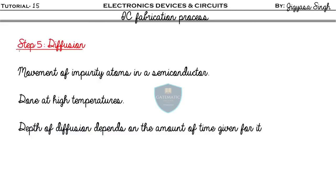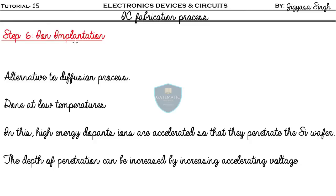Step five is diffusion. Here, diffusion means the movement of impurity atoms in a semiconductor. This process is done specifically at high temperature, and the depth of diffusion depends on the amount of time given — more time results in greater diffusion depth, and less time results in lower diffusion depth.